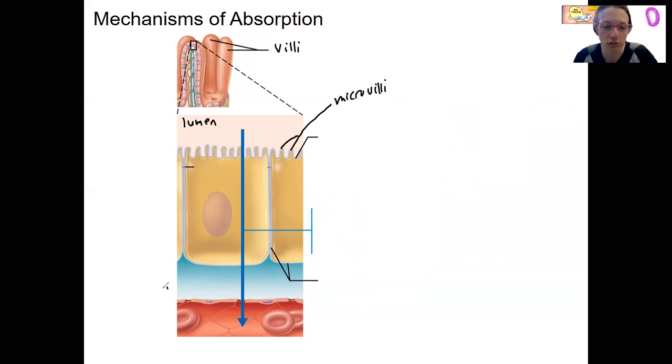We've got interstitial fluid, and then we've got a capillary. Our goal is to get stuff, let's just put nutrients for now, from the lumen into the capillary. In order to do that, we have to go through the epithelial cell. These are here, this little thing right there is a tight junction. You remember that epithelial cells are linked by tight junctions. It was a feature we talked about in the fall.